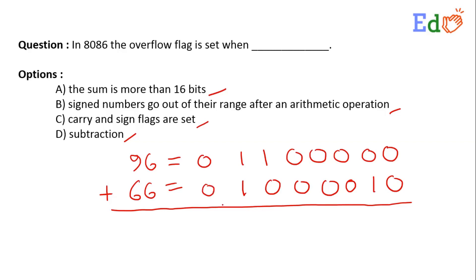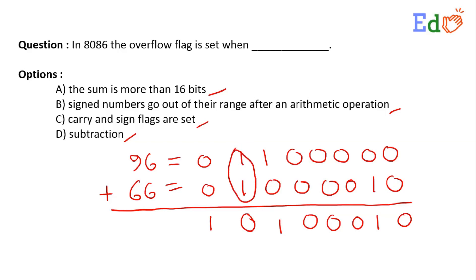Here I have one sign bit as well. All these numbers are positive, so the sign bit will be 0 and 0. If I add these two numbers I get 0 1 0 0 0 1 0, and I have a carry, so the result carries into the next sign bit. The sign bit is not part of the original number.